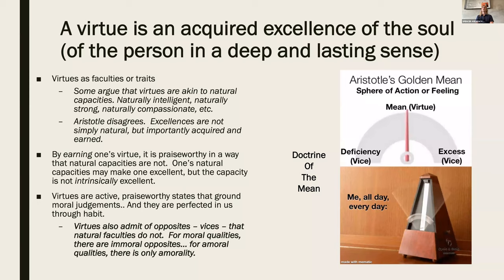A virtue is a character trait with a motive quality that hits the mean between excess and deficiency. Another example: anger. Righteous anger is a virtue. Being irascible — way too angry — is an excess of anger. Likewise, being timid or meek when you should stand up for yourself is a deficiency. Righteous anger, the one that hits the mean, is the virtuous sort. A virtue is a character trait that's an excellence of the soul, and in action, it's a habituated disposition to push us towards a particular kind of action that hits the mean in the situation called for. The character traits generally trend towards producing the right kinds of action.